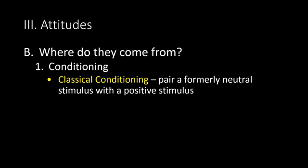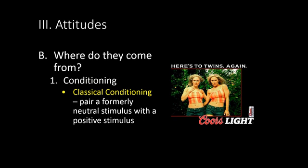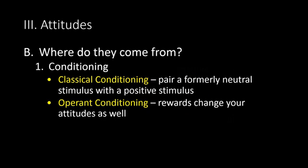This is how advertising often works — by trying to pair a supposedly neutral stimulus like Coors Light with a positive stimulus like attractive people. You can be classically conditioned to like a beer because it's associated with things that you might like.